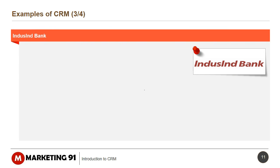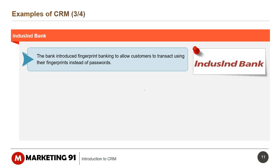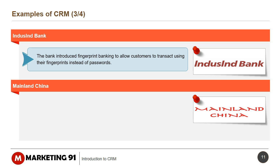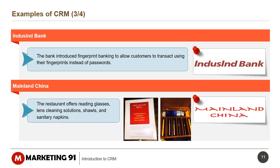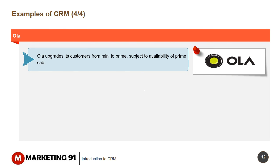IndusInd Bank introduced fingerprint banking to allow customers to transact using their fingerprints instead of passwords. Mainland China offers reading glasses, lens cleaning solutions, shawls, and sanitary napkins to customers. Ola upgrades its customers from Mini to Prime, subject to availability of PrimeCab.